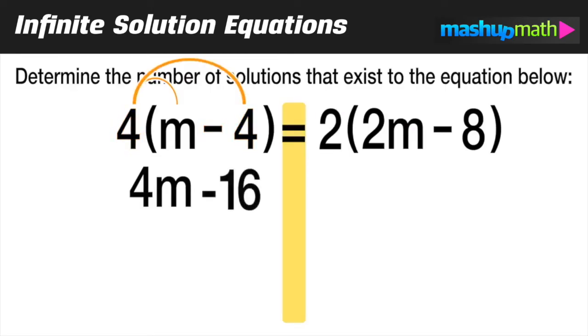Over on the right side of the equal sign, we're going to do the same thing by distributing that 2. 2 times 2m is equal to 4m, and 2 times a negative 8 is equal to negative 16.